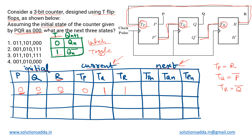If TP is zero and the input P is also zero, we stay in latch mode, so the next state P remains zero. For Q: TQ is 1 but the input Q is zero — latch mode — so TQ(n) stays as 1. For TR: input R is zero, latch mode, so TR(n) copies TR which is 1. The current state was 0,1,1 and the next state is also 0,1,1. So from triple zero, the next state is 011.